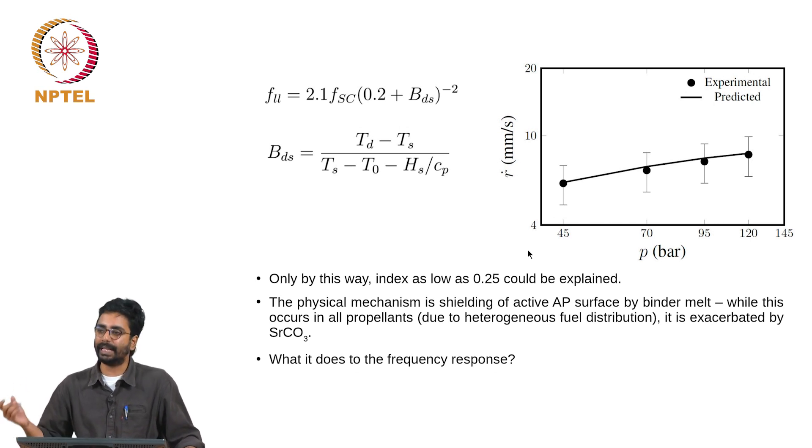This component of the flux decreases with increase in pressure because lateral diffusion decreases with increase in pressure. Therefore, even in a normal regular composition, the heat flux that comes for the decomposition of the binder decreases with pressure, and this effect is made worse by addition of inhibitors like strontium carbonate. What happens? The binder can melt but it will not decompose, and therefore there is accumulation of binder at the surface which can laterally move and cover AP surfaces.